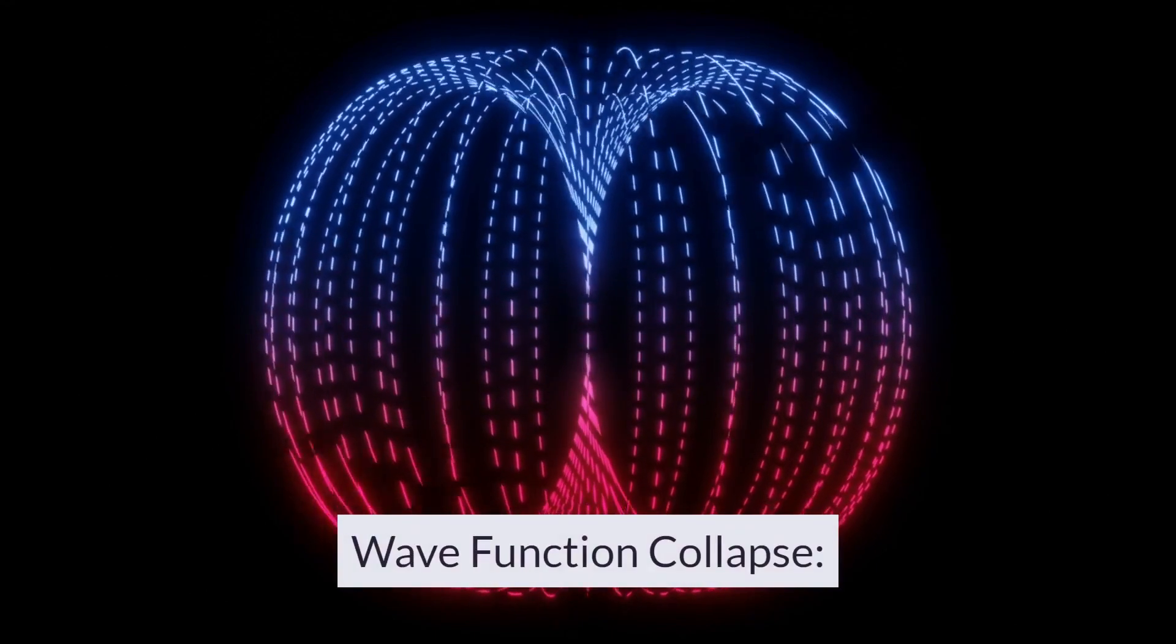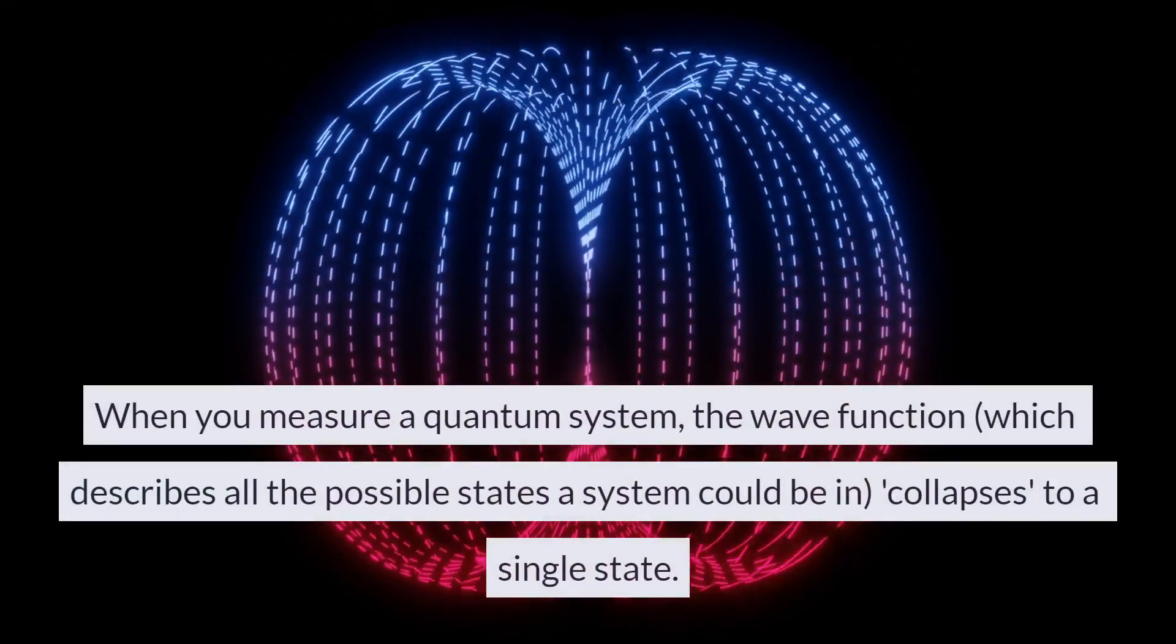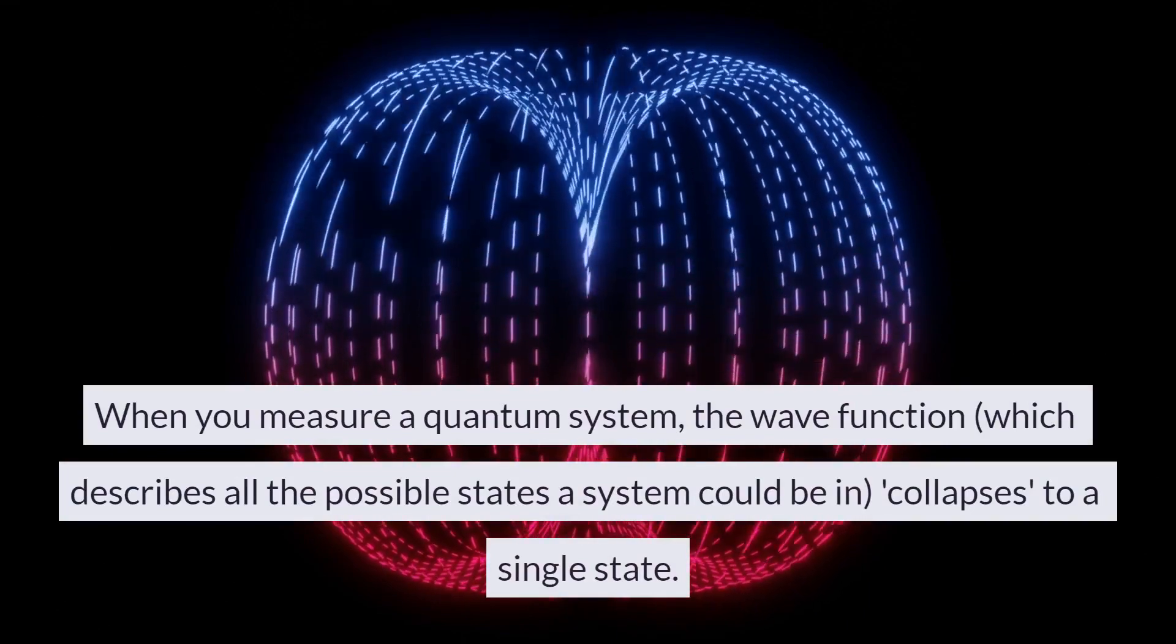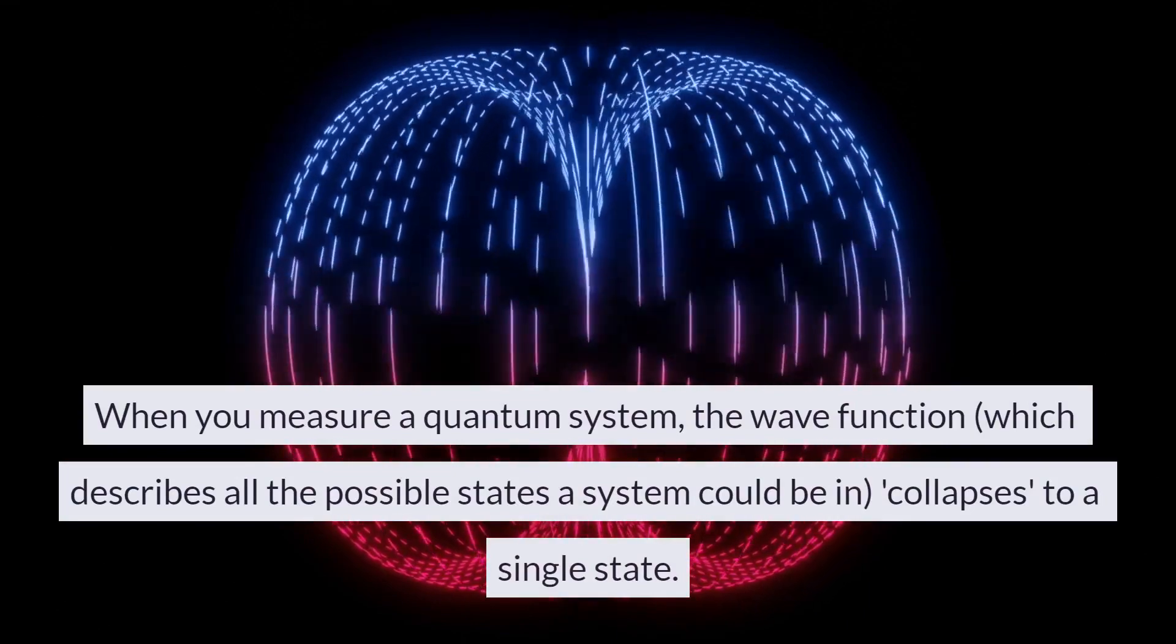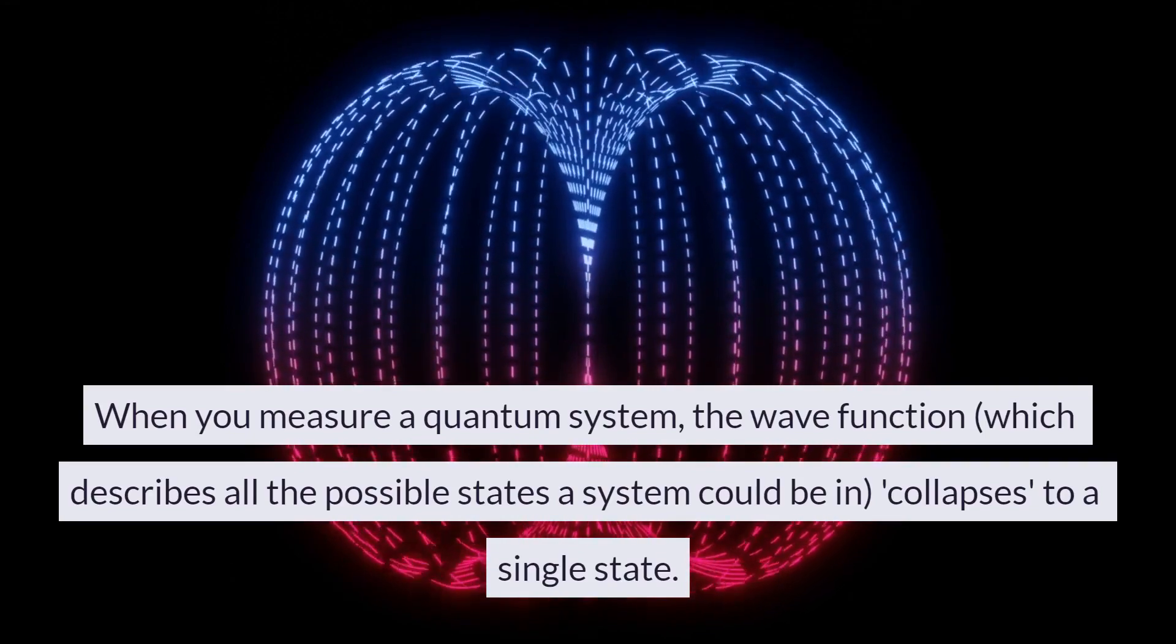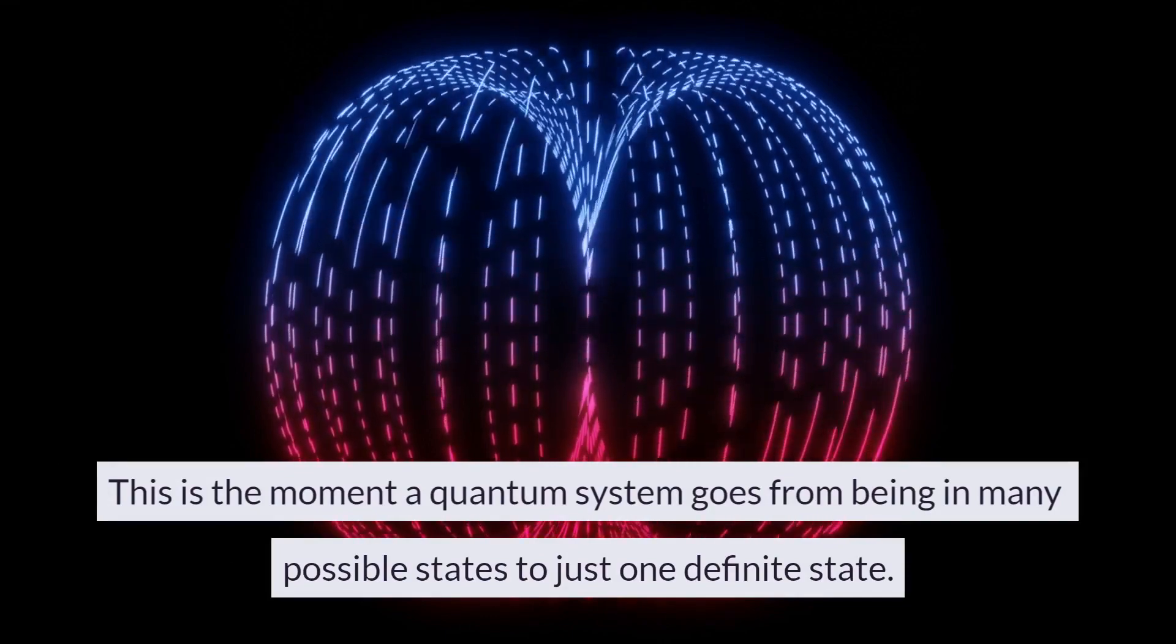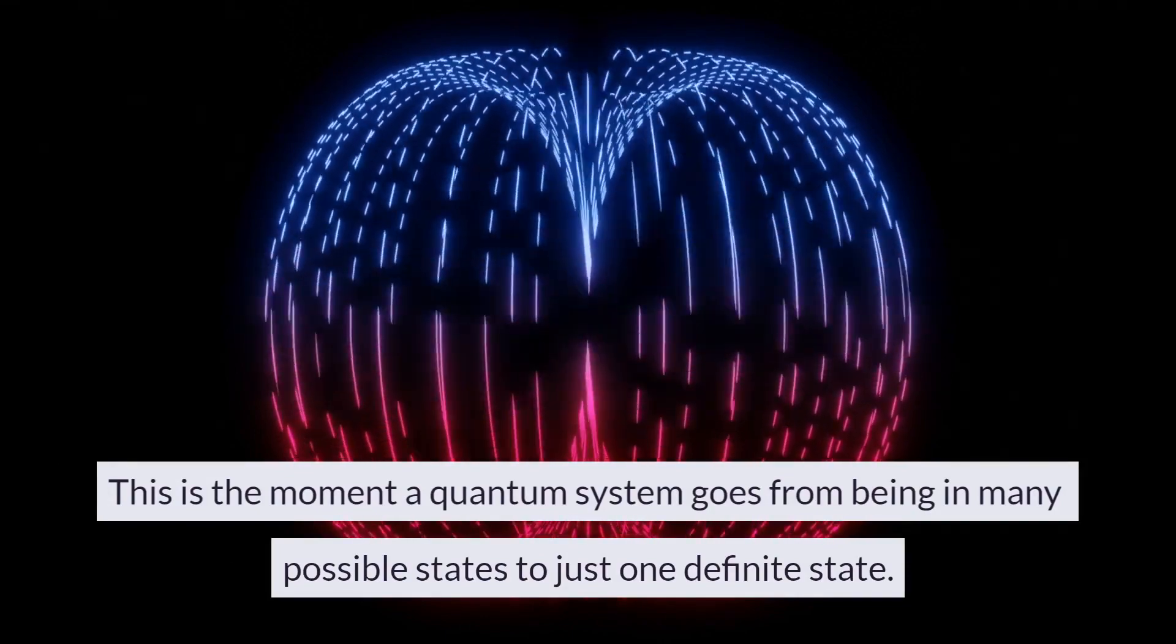Wave function collapse occurs when you measure a quantum system. The wave function, which describes all the possible states a system could be in, collapses to a single state. This is the moment a quantum system goes from being in many possible states to just one definite state.